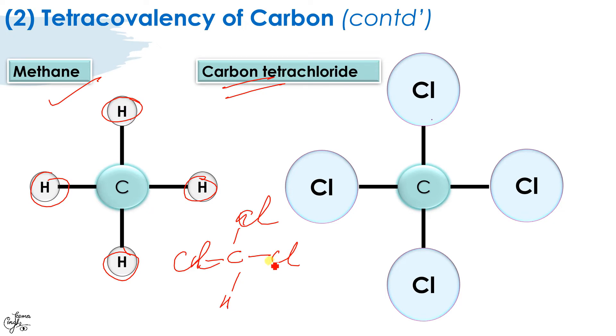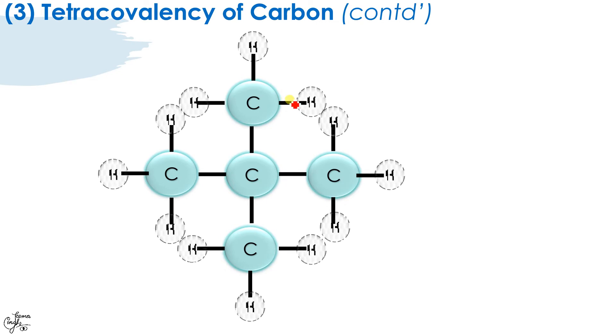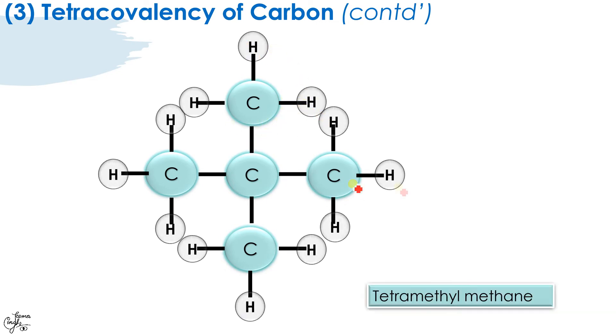So you can see carbon has a valency of four and can combine with other elements or itself, and this helps it to form so many compounds. See, it can combine with itself also, carbon, and then these are the free valencies. It can either combine further with hydrogen or methyl group and so on. You don't have to remember the names, this is all in your higher classes. So you got an idea what exactly tetracovalency of carbon stands for.